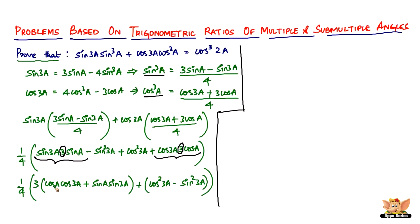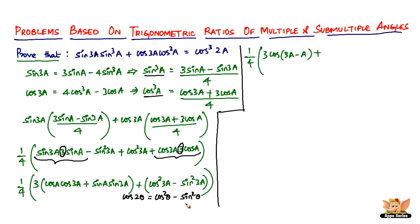Notice that cos(a)·cos(3a) + sin(a)·sin(3a) matches the formula cos(A − B) = cos(A)·cos(B) + sin(A)·sin(B). So this equals 3·cos(3a − a) = 3·cos(2a). Also, cos²(3a) − sin²(3a) is of the form cos²θ − sin²θ = cos(2θ), so it equals cos(2·3a) = cos(6a).